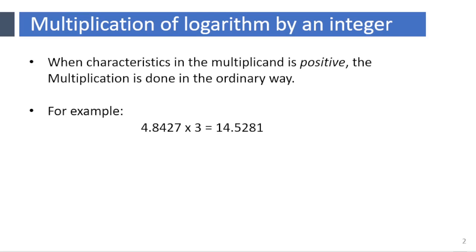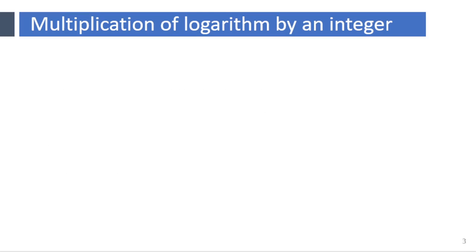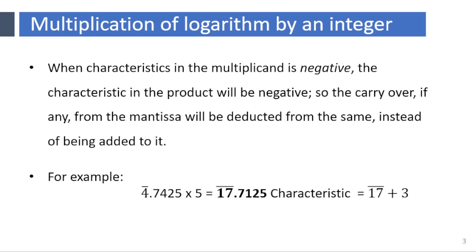Similarly, when characteristics in the multiplicand is negative, the characteristic in the product will be negative. So the carryover, if any, from the mantissa will be deducted from the same instead of being added to it. For example, 4̄.7425 × 5 = 17̄.7125.